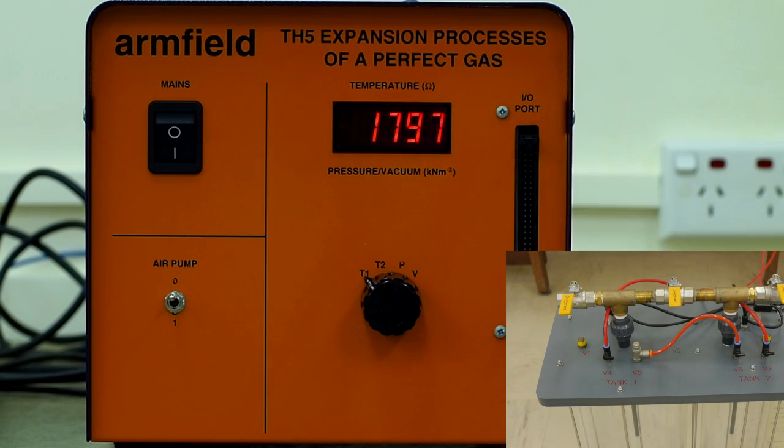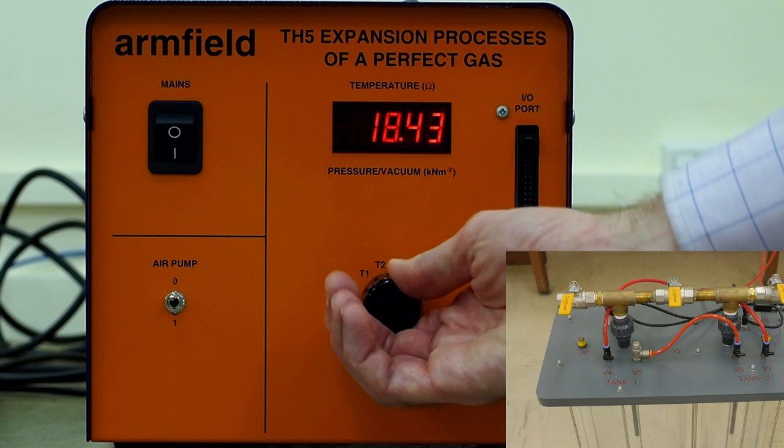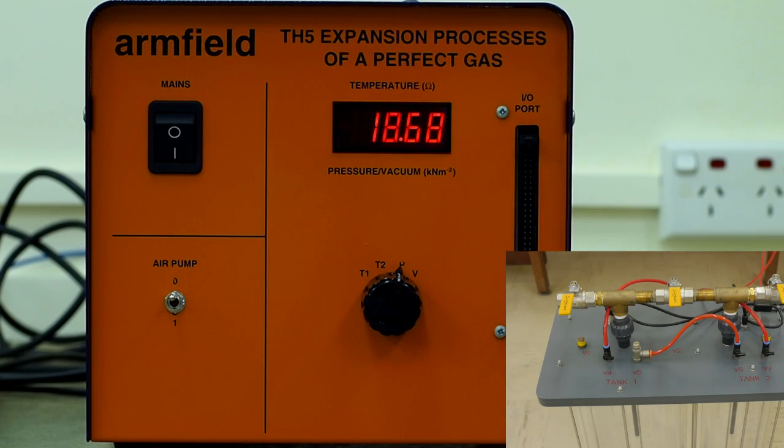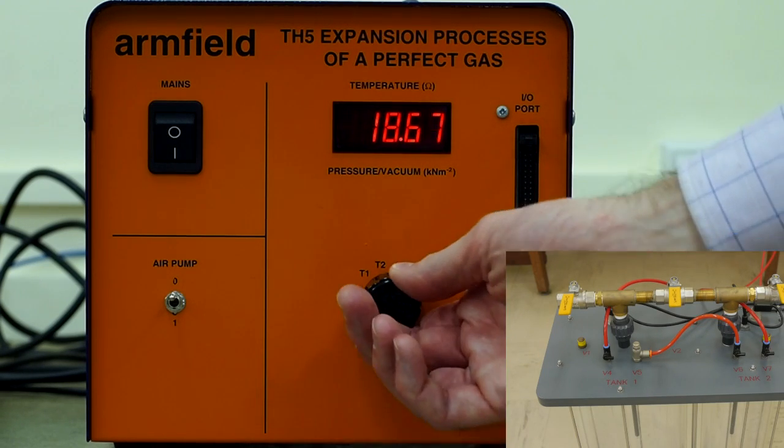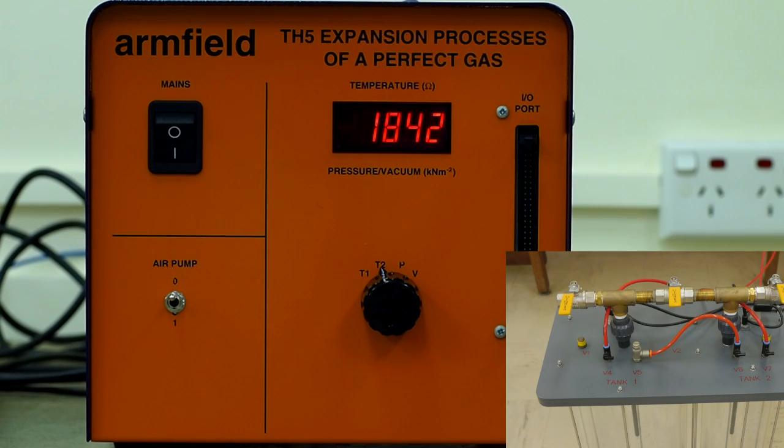Once stability has been achieved, use the display control knob to find the temperature and pressure for the large cylinder, and temperature and vacuum value in the small cylinder. These are the initial values of the system, and must be recorded in your lab notes.